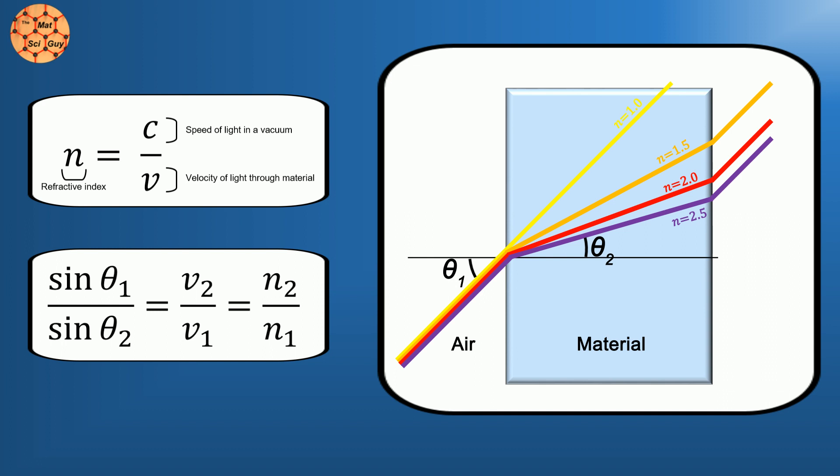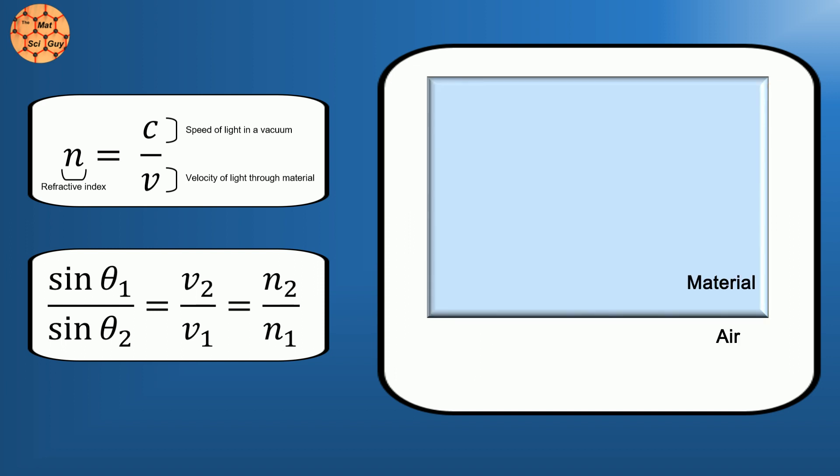But materials with higher refractive indexes will refract it at higher angles. The same equations apply to light exiting the material as well. Light can be refracted again if the angle is steep, but if the angle is a bit closer to parallel,